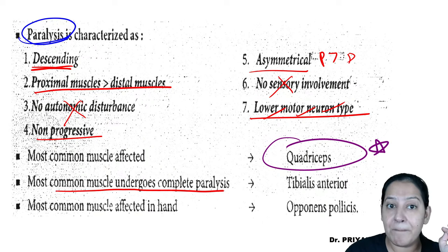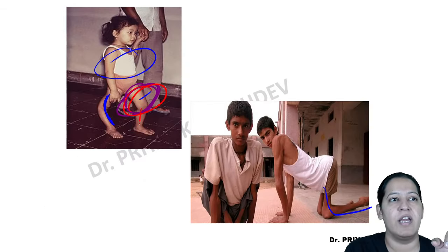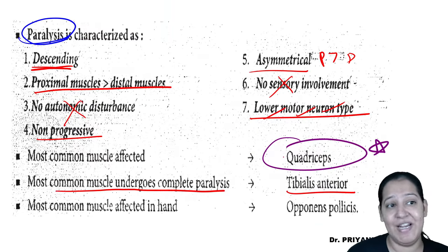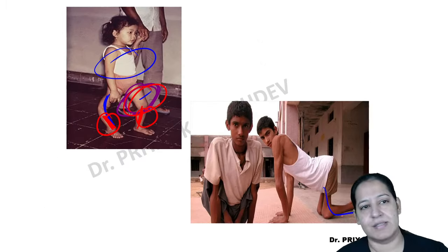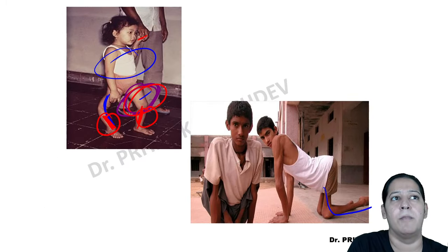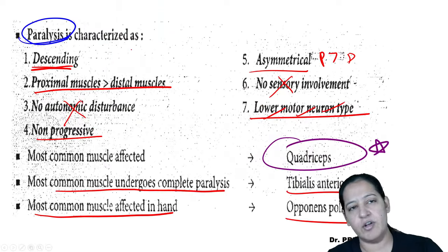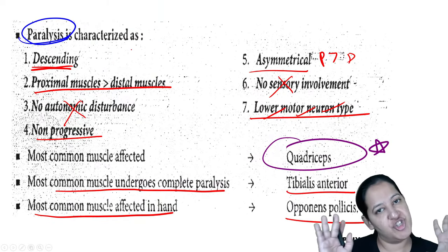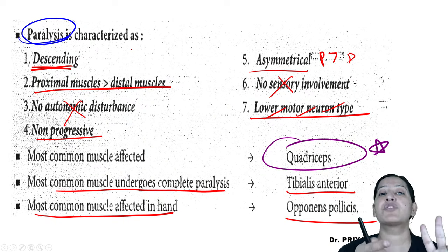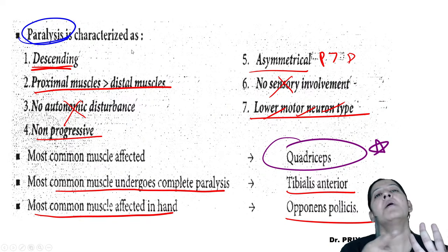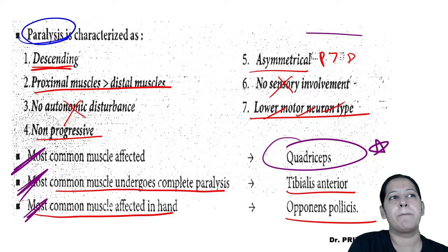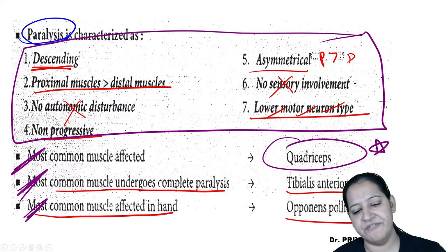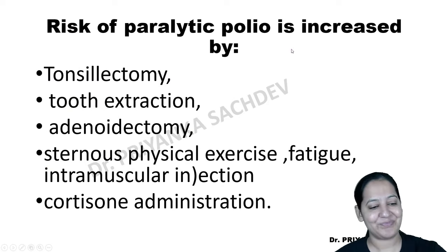The muscle most commonly showing complete paralysis is tibialis anterior. In the hand, the most commonly affected muscle is abductor pollicis. These are three important MCQ points: most common muscle affected (quadriceps), most common muscle with complete paralysis (tibialis anterior), and most common muscle affected in the hand (abductor pollicis).